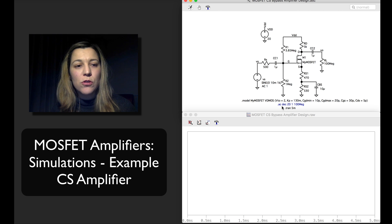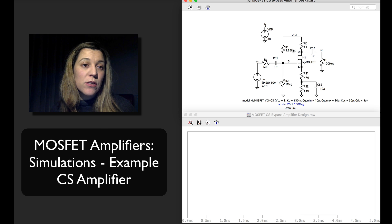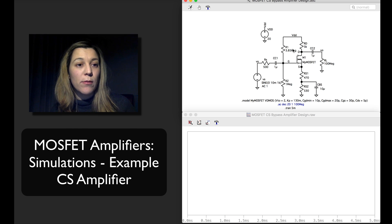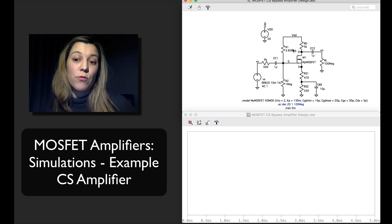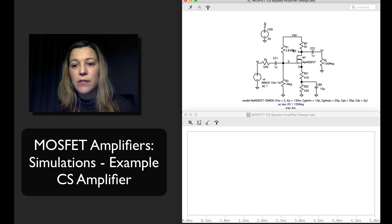And the first thing I wanted to do is run a transient analysis to check two things. For one thing I wanted to double check that the DC biasing was correct. The DC biasing point that we established matches the simulation but also to confirm that the gain is negative 10 as we have designed for.